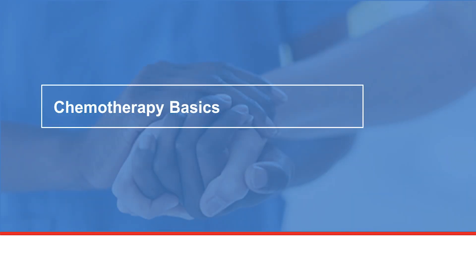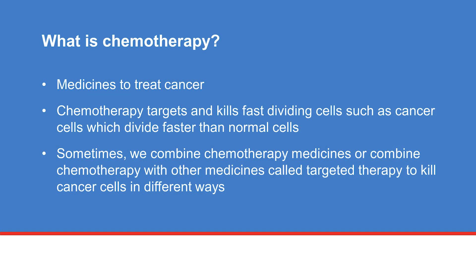We will first discuss what medicines are included in your chemotherapy, how and when they are given, and where chemotherapy is usually administered. In general, chemotherapy refers to a group of medicines used to kill cancer cells. Chemotherapy can be used in combinations and may be combined with other medicines known as targeted therapies to kill cancer cells in different ways.